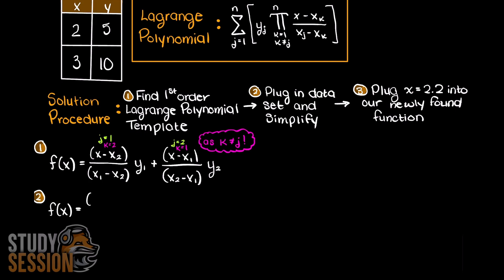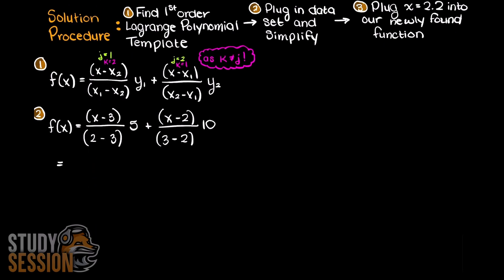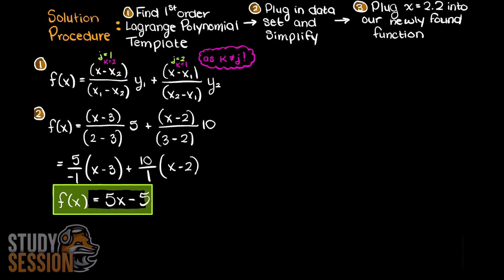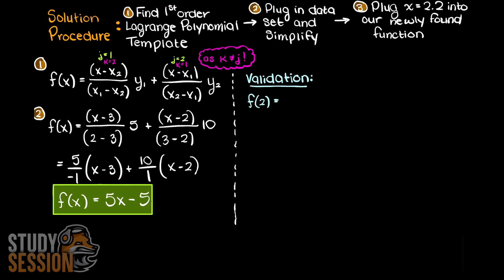Since first order Lagrange polynomials are quite simple, I am going to go ahead and simplify the solution now. This leaves us with 5x minus 5, which is actually a straight line. Now if you want to do a quick check by plugging our x-terms into our Lagrange polynomial, remember that when interpolating our function, it needs to pass through all of the given data points. Therefore, by plugging in our x-terms we need to get our y-terms back.